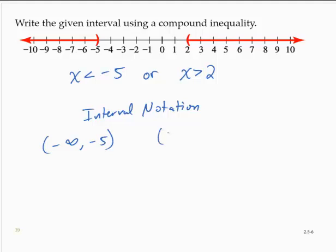The second interval goes from 2 to positive infinity. And we would combine those two intervals with the symbol union. So that's a set symbol called union.